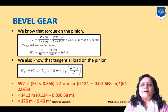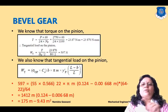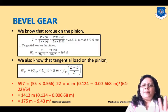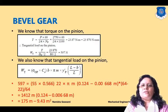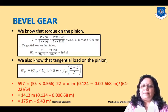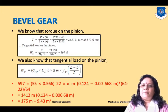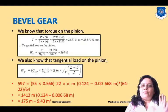Power = 2πNT/60, so torque T = P × 60 / (2π × np) = 2750 × 60 / (2π × 1100) = 23.87 N·m (23870 N·mm). The tangential load Wt = T / (dp/2) = 23870 / 40 = 597 N.